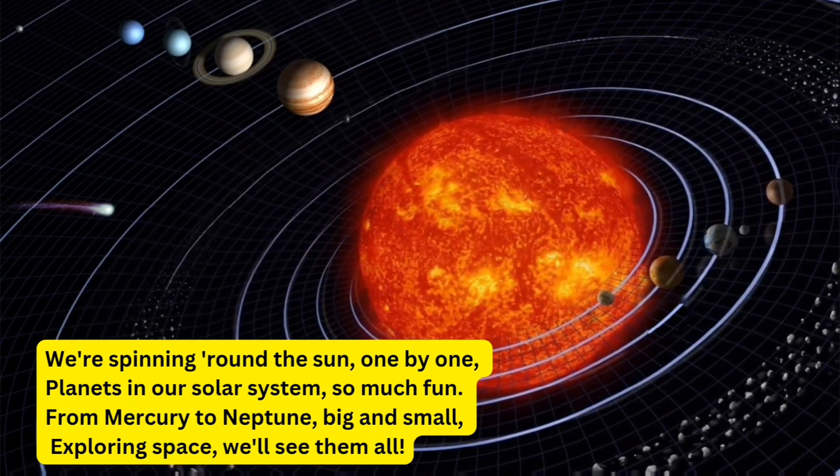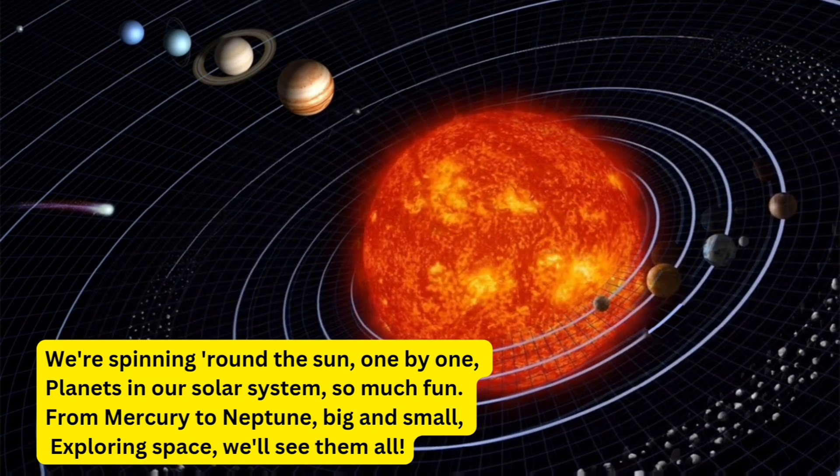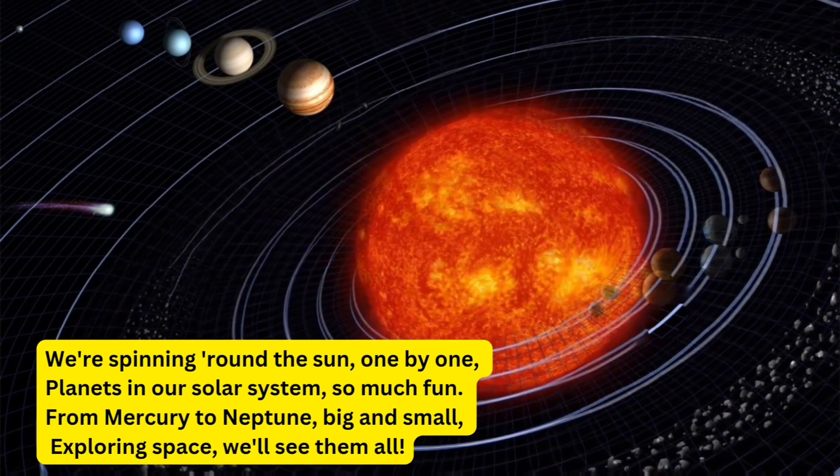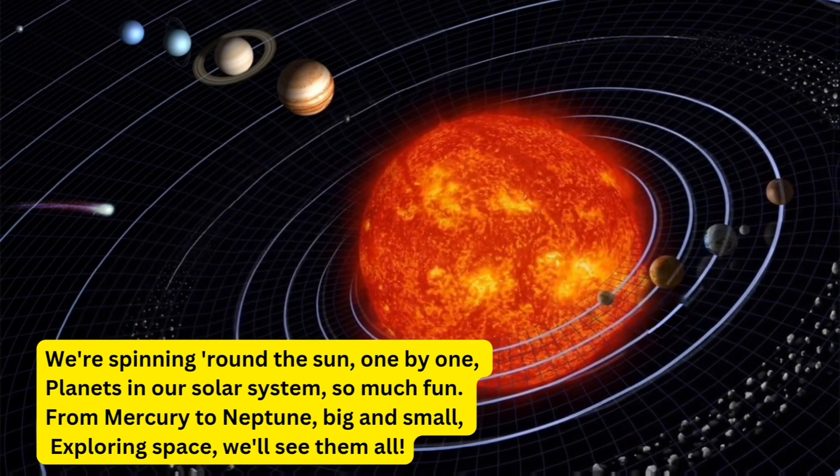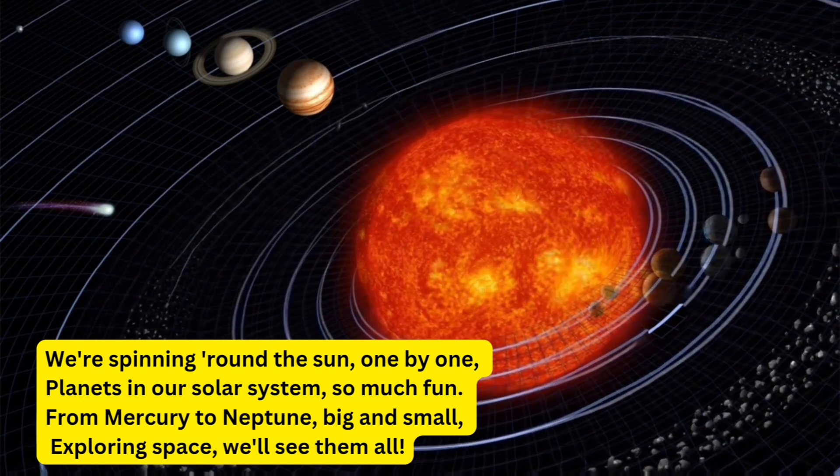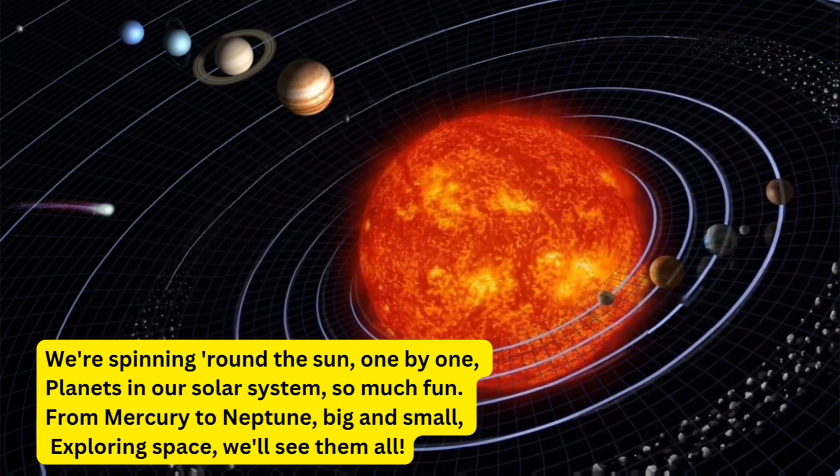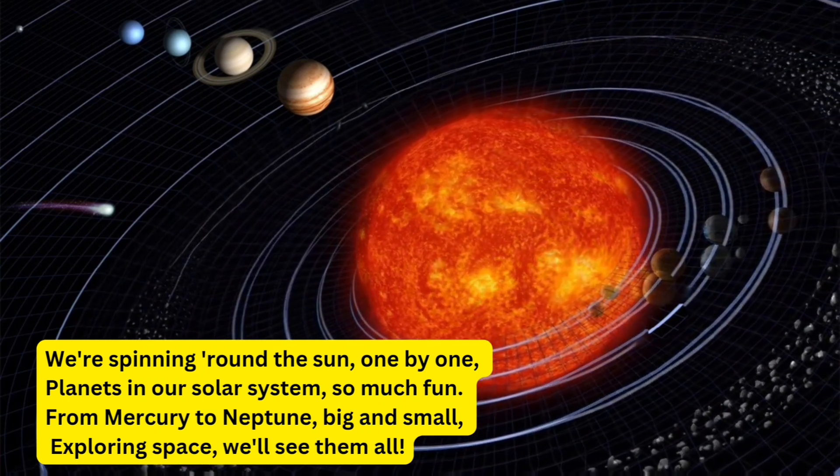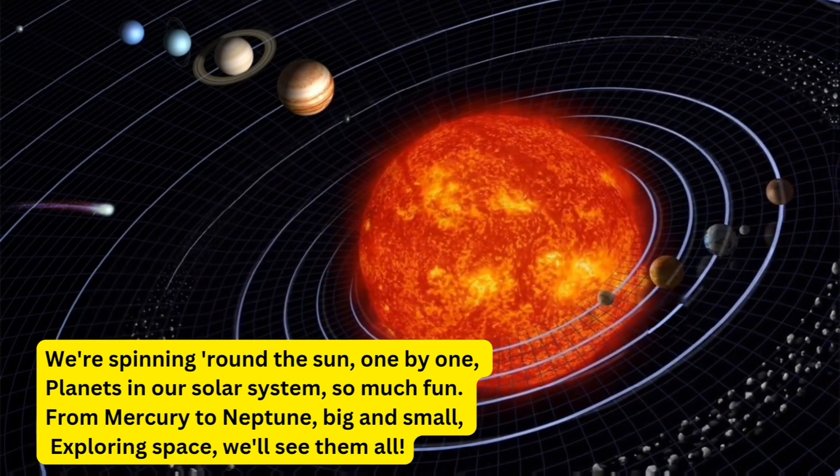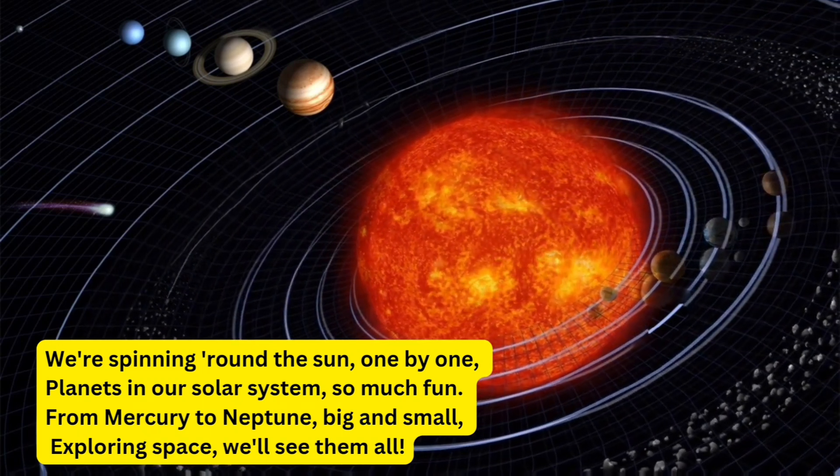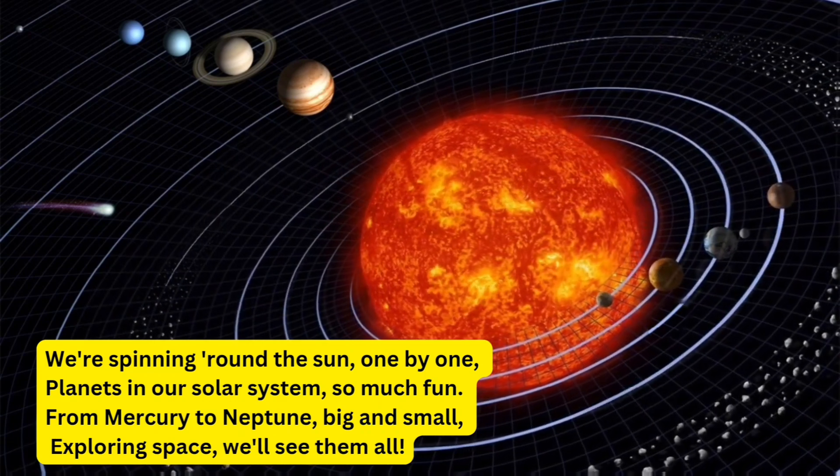one by one. Planets in our solar system, so much fun. From Mercury to Neptune, big and small. Exploring space, we'll see them all. We're spinning round the sun, one by one. Planets in our solar system, so much fun. From Mercury to Neptune, big and small. Exploring space, we'll see them all.